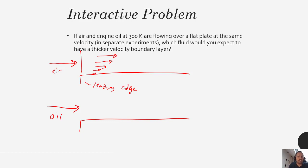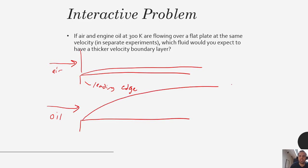We're asking which boundary layer is going to be thicker. Oil is a much more viscous fluid, so the boundary layer is going to be much thicker. If we were to draw the velocity boundary layer for each, we might expect air to be quite thin and the oil to be much thicker — meaning it takes a longer distance to go from zero velocity at the solid-fluid interface up to the free stream velocity, denoted by u-infinity.